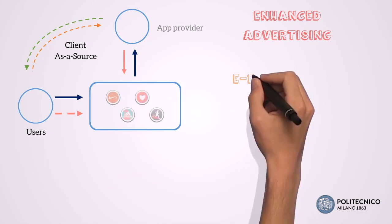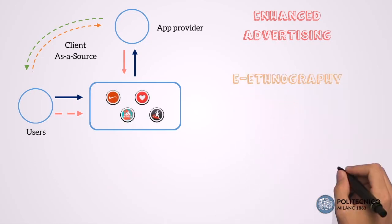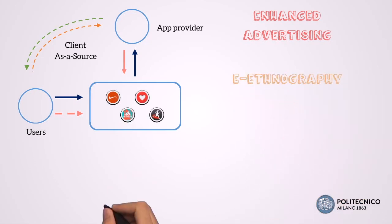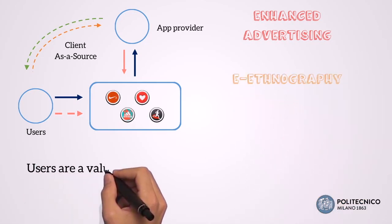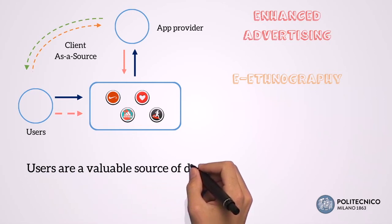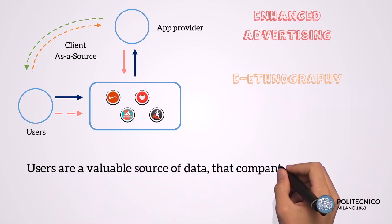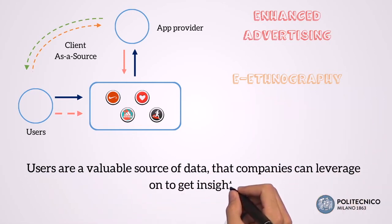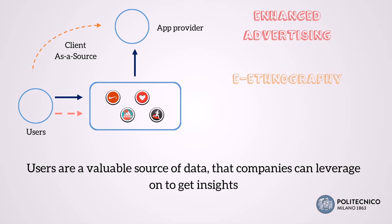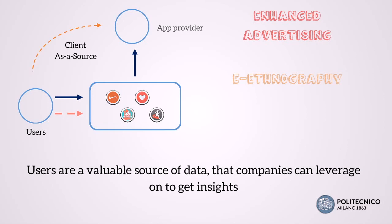In the second model, e-ethnography, companies can use the data gathered from users to get insights on their behaviors that can be useful in other units within the same company. This feature modifies the model without having a direct revenue stream from the second side and losing the client-as-a-target strategy.